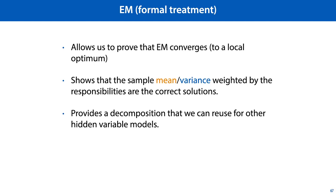So what do we get out of this, since we already have the EM algorithm and it seems to work pretty well? First, it will help us to prove that EM converges to a local optimum. Second, we can derive the responsibilities and the weighted mean and variance as the correct solutions. In the last video, if we had come up with five other ways of doing it that also seemed pretty intuitive, we would have had to implement and test all of them to see which worked best. With a little more theory, we can save ourselves the experimentation.